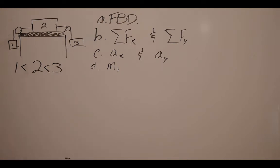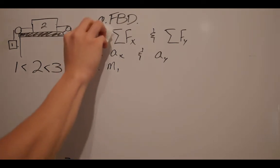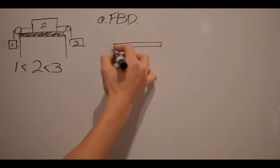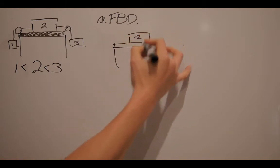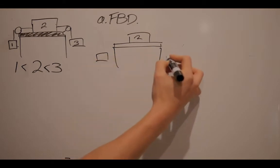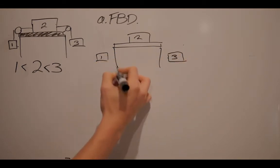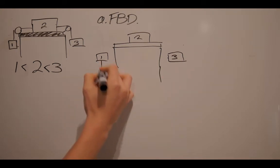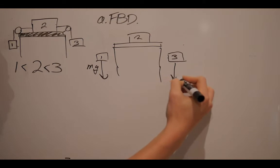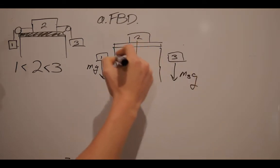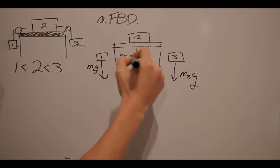We're going to start off with a free body diagram. I'm going to redraw the table, mass 2, mass 1, and mass 3. The first thing that we should always draw is the weight vector, so we have m1g, m3g, and m2g.